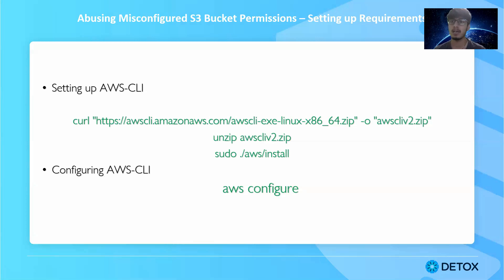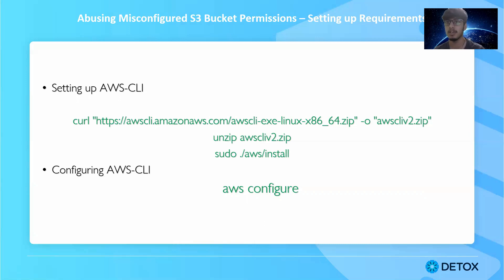The reason we access our own account is that sometimes developers forget to set permissions properly and specify that any authenticated AWS account can read, write, or delete anything on the S3 bucket — not just the organization's authenticated users. Since I also have my own admin account and am authenticated to AWS, I fulfill and satisfy their requirements.